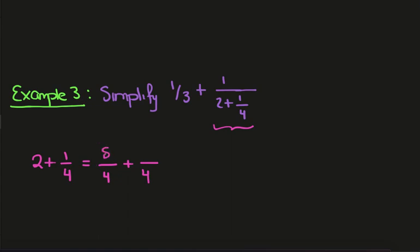Cross multiplying we'll have 8 and then a 1. And we'll end up with 9 over 4. So now this whole term here just becomes 1 over 9 over 4.